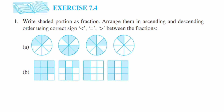Here is question from Exercise 7.4, the first question from the Fraction chapter of Class X. The question asks: write the shaded portion as a fraction, arrange them in ascending and descending order using the correct sign — greater than, equal to, and less than — between the fractions.